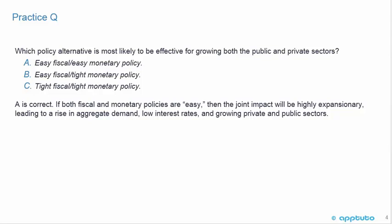Clearly, C is wrong. Tight fiscal and tight monetary policy is not going to be effective for growing the public and private sector — it's going to be contractionary. An easy fiscal but with tight monetary policy? No — the tight monetary policy won't be effective for growing the private sector.